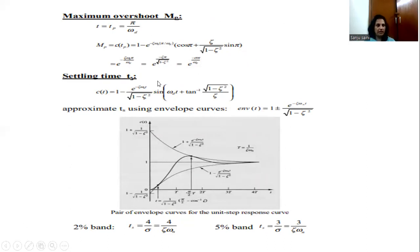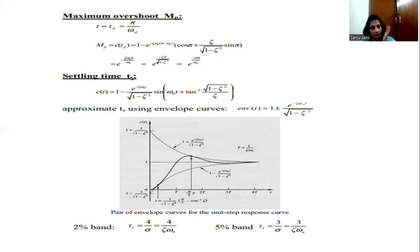The settling time is the time taken by the system response to reach and stay within the tolerance band — this envelope. For the system response to stay within this envelope, if we take the 2% band, the settling time comes out to be 4 divided by ζωn. If we take the 5% band, the settling time comes out to be 3 divided by ζωn. All these specifications should be as small as possible; if rise time is less, the system response is fast and is quickly moving towards the desired output. If maximum overshoot is less, it means the system stability is not endangered and the system is working properly.